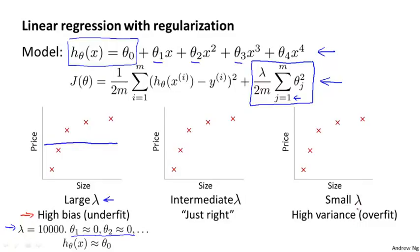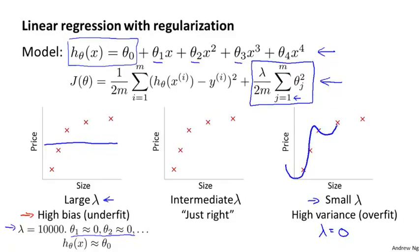At the other extreme, if we have a very small value of lambda, such as if lambda were equal to 0, and given that we're fitting a high order polynomial, this is our usual overfitting setting. Basically without regularization or with very minimal regularization, we end up with our usual high variance overfitting setting.